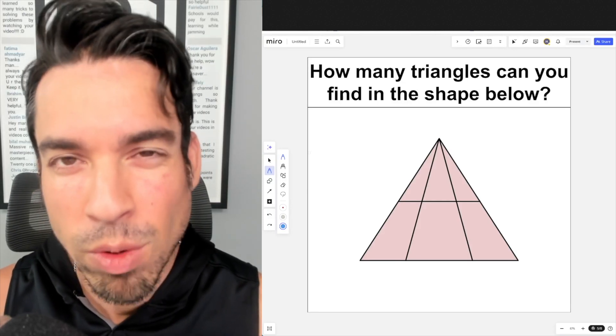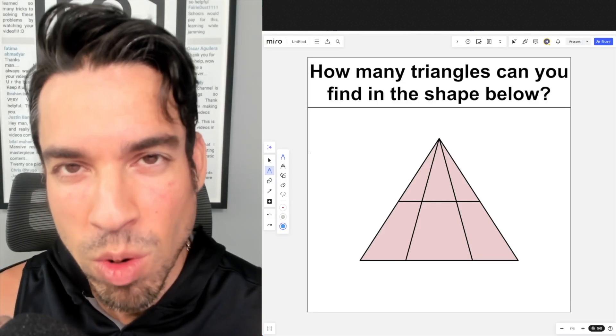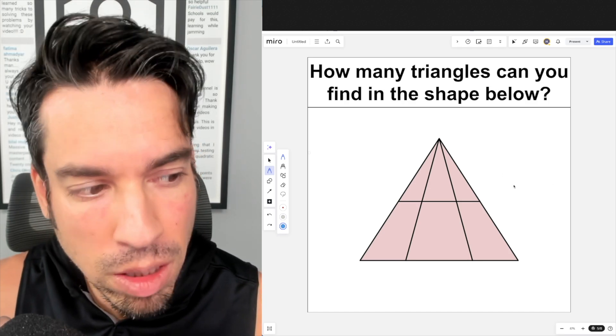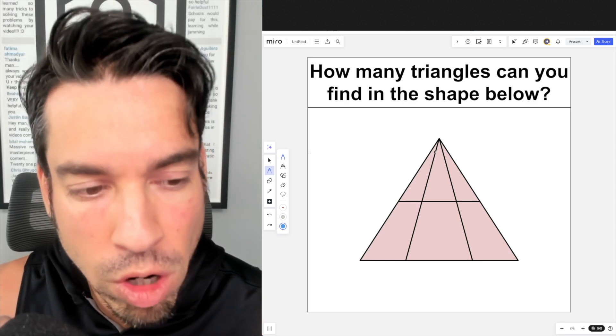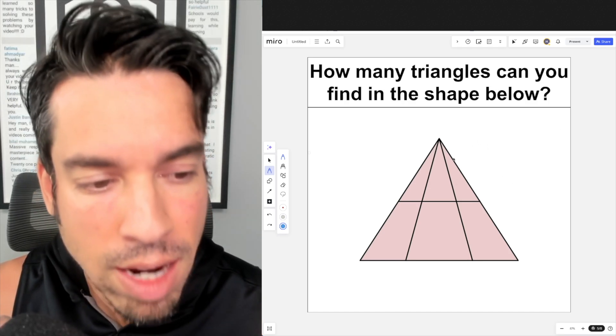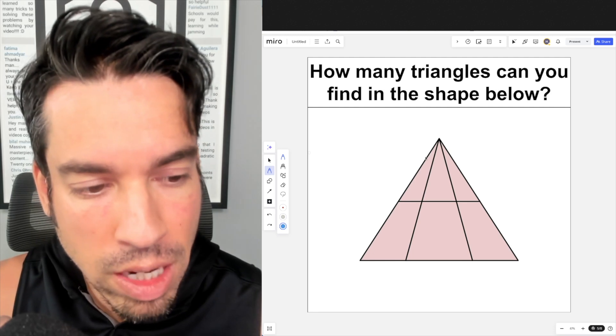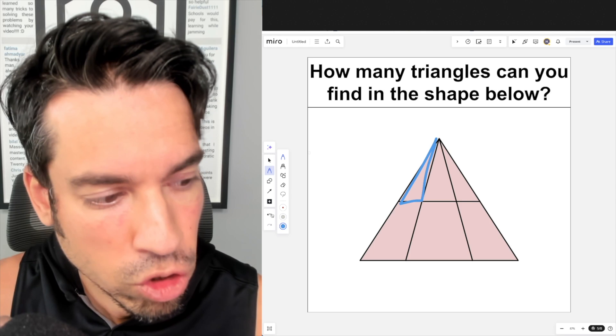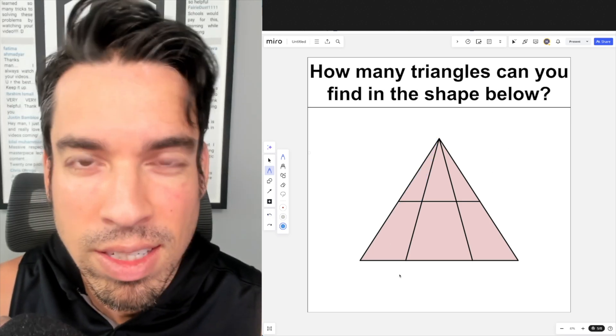What's up everybody and welcome back to another math puzzle. In this one, the question is: How many triangles can you find in the shape below? We're talking about triangles—three-sided shapes that are fully enclosed with lines. For example, this right here is one triangle. Hit that pause button and see if you can figure it out.